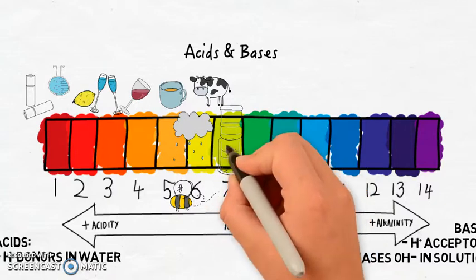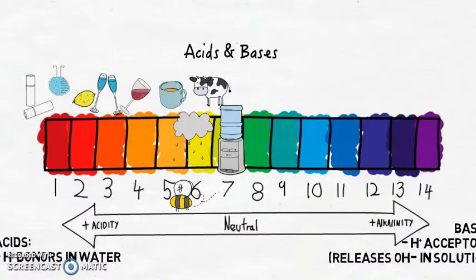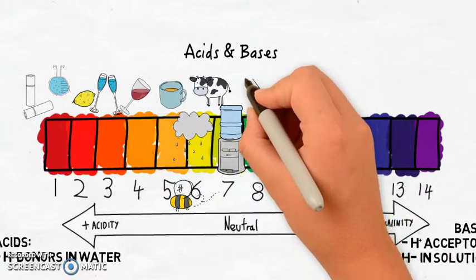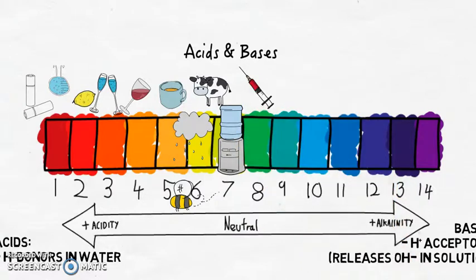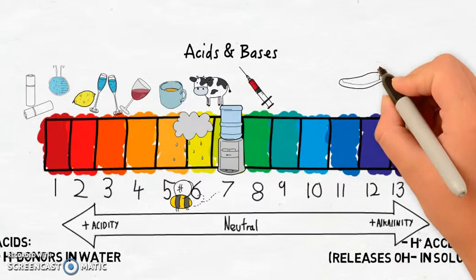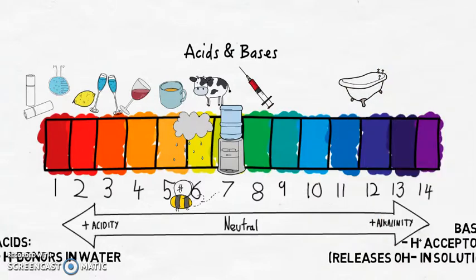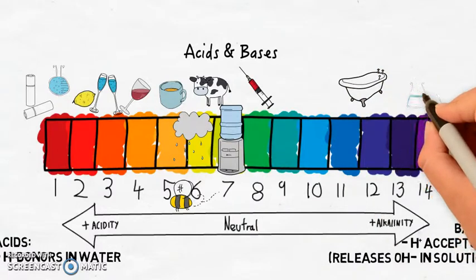Substances with a pH above 7 and therefore classified as bases include your blood, which has a pH around 8, and most of our cleaning products such as bleach, which has a pH around 12.